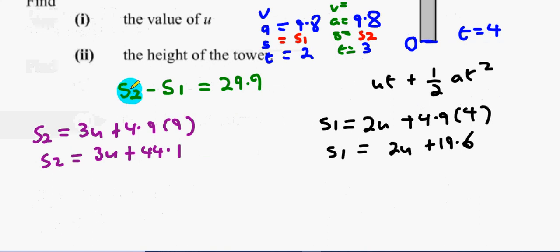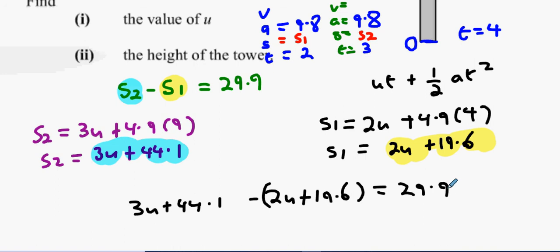Now s2 take away s1: 3u plus 44.1 take away 2u plus 19.6 equals 29.9. And the answer is 5.4 m/s.